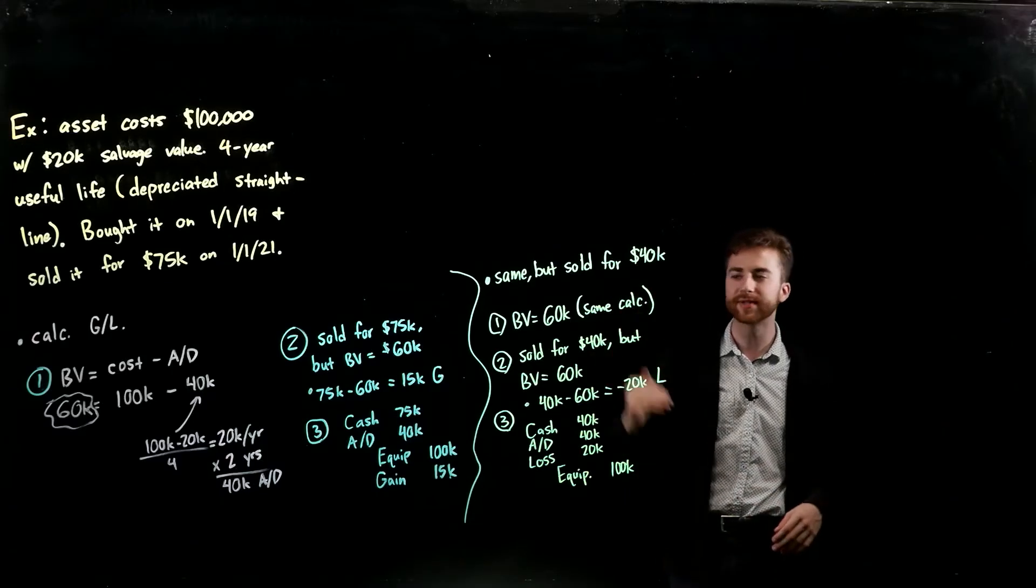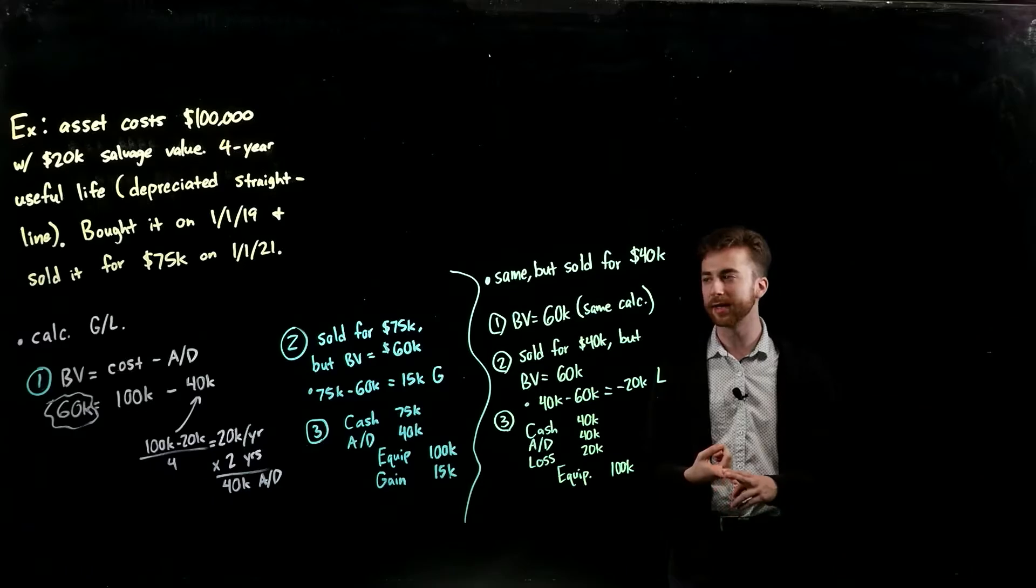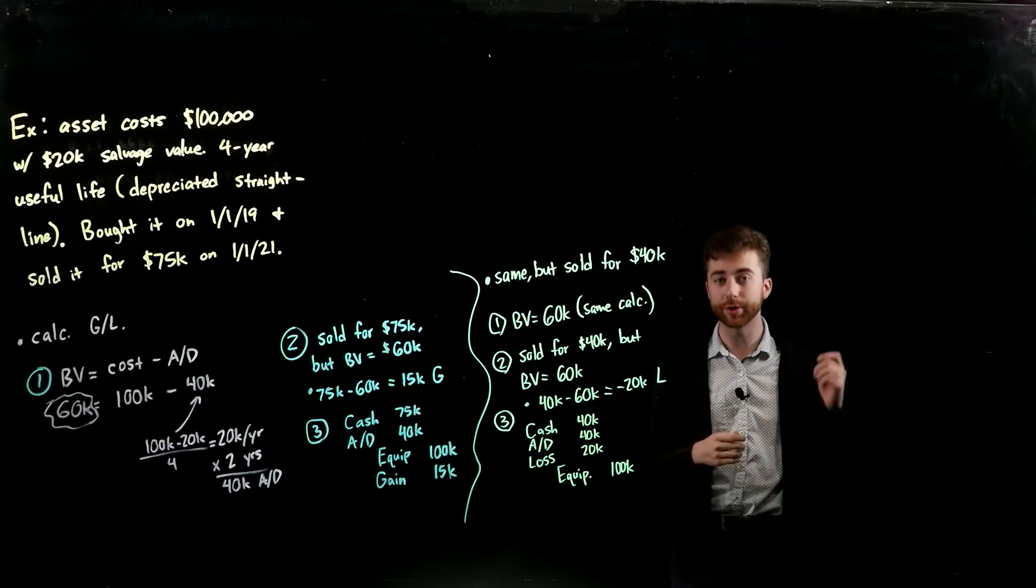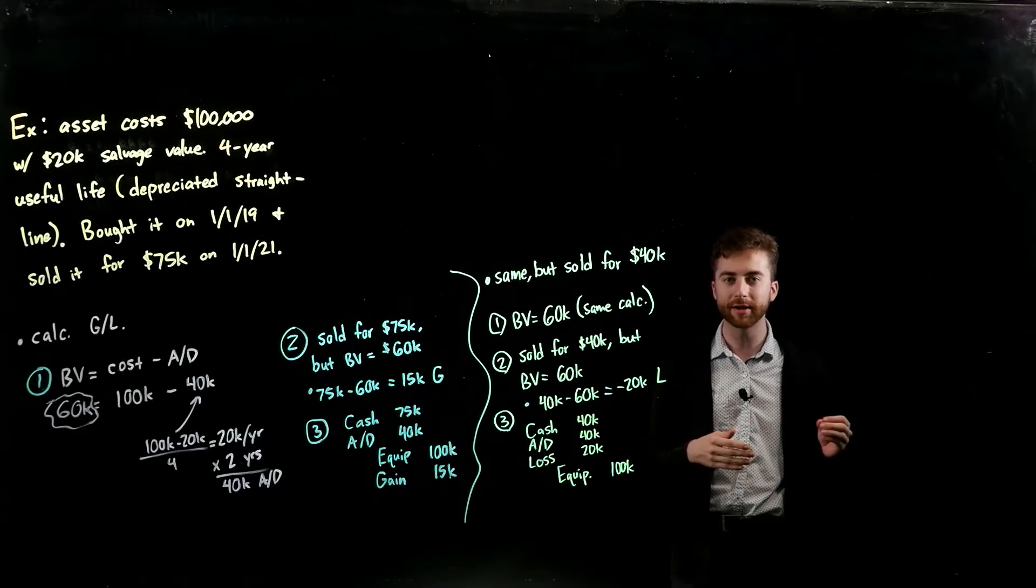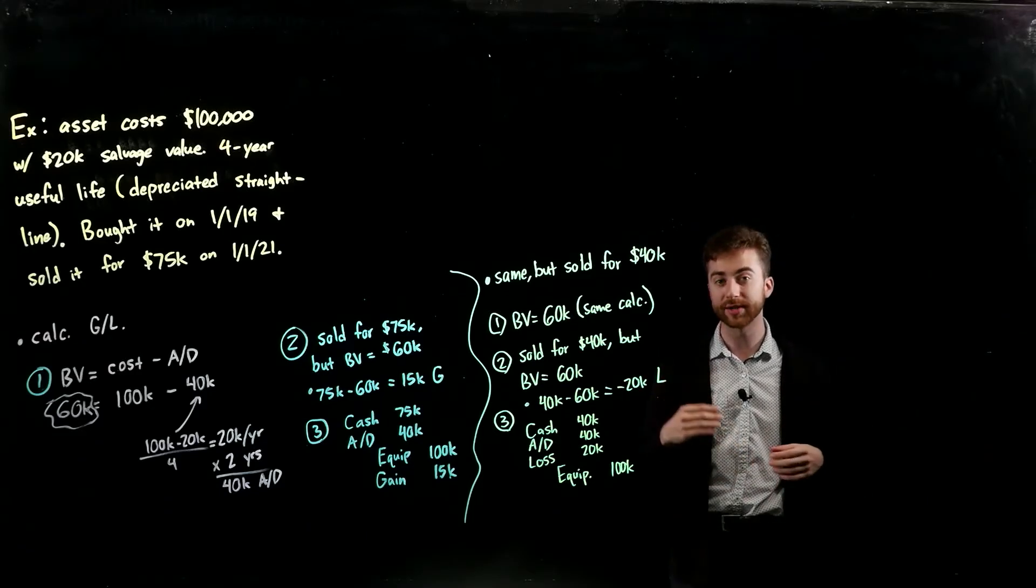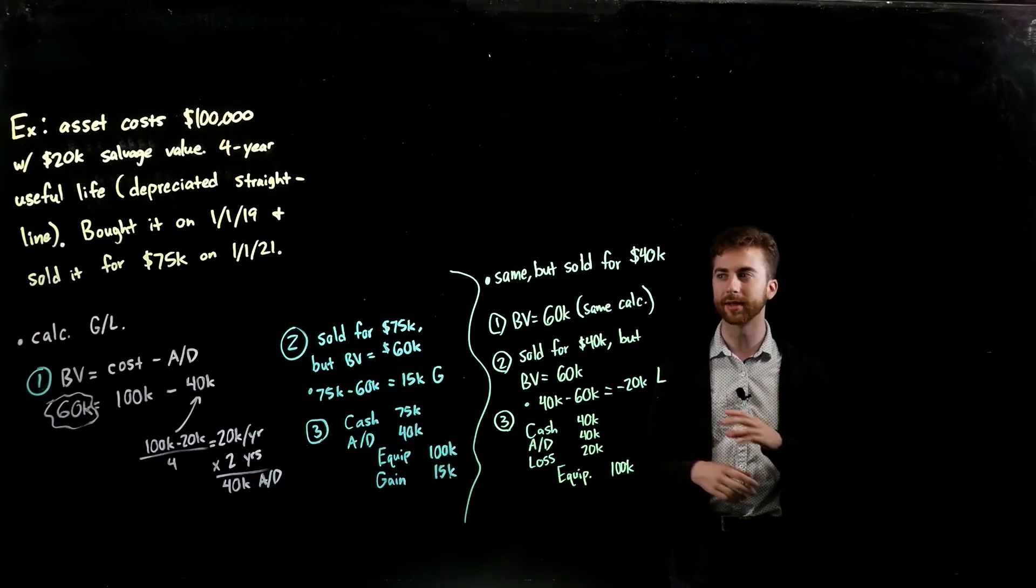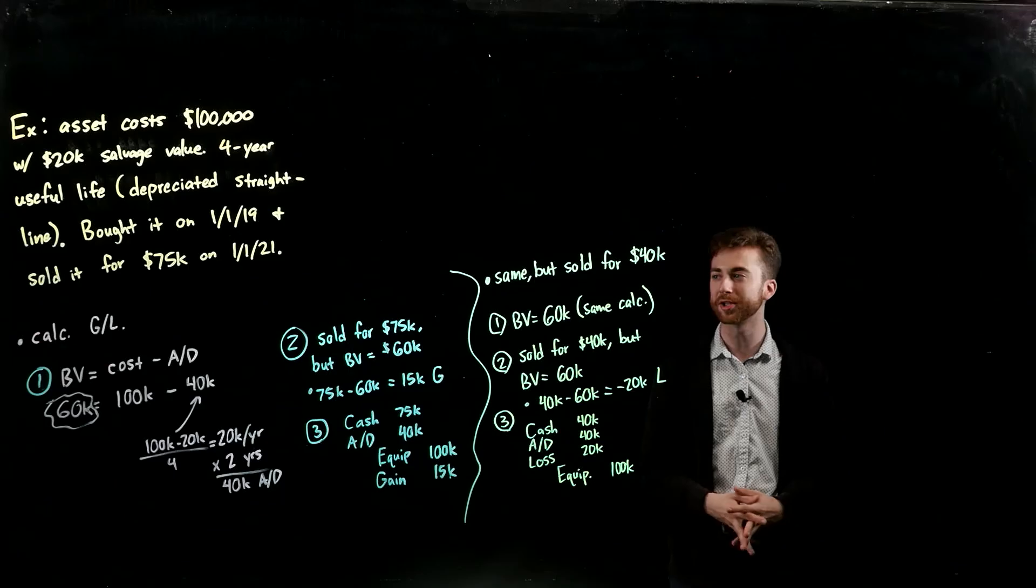You can see it's just a series of steps to go through. Start off by finding your book value so you can compare that book value to your selling price. If your selling price is greater than your book value, that's going to be a gain. If your selling price was less than your book value, that's a loss. So I hope that gives you a good framework to calculate your gains and losses. Thank you for watching and I hope that helped.